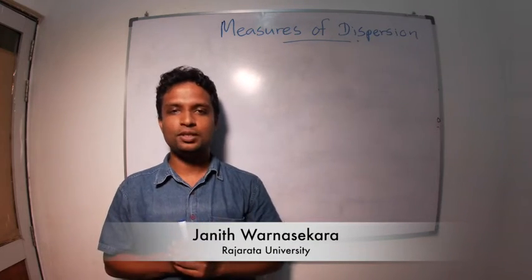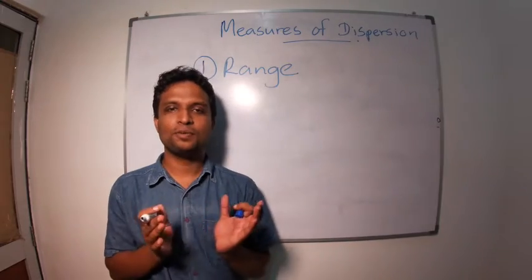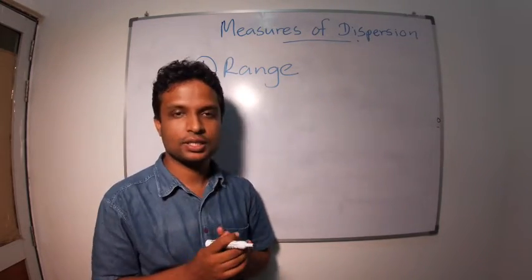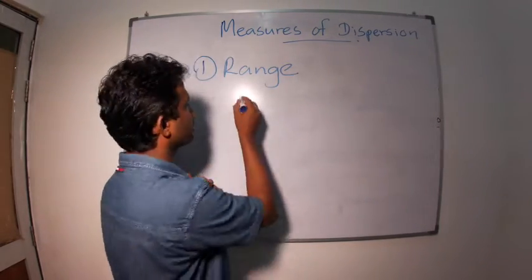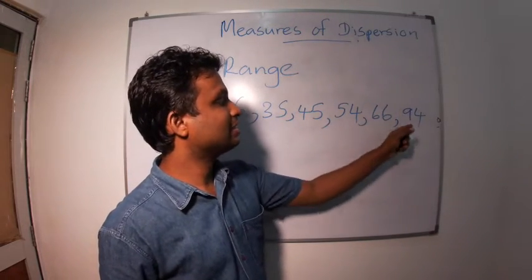The most easiest method to measure the dispersion is range. We have a small class with six students. These are their marks: 6, 34, 45, 54, 66 and 94.